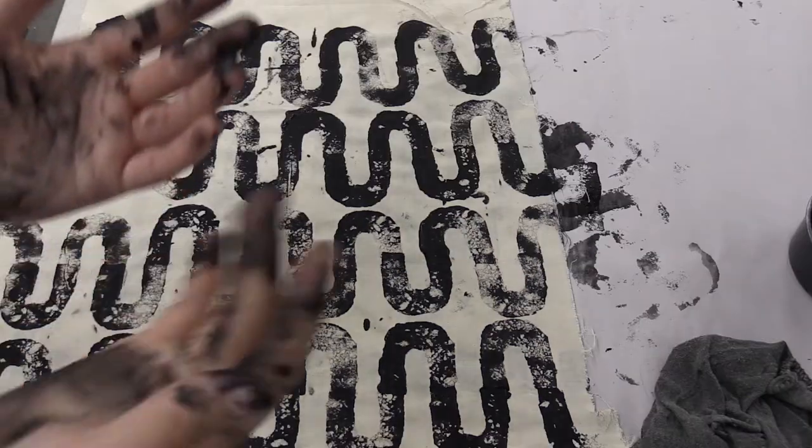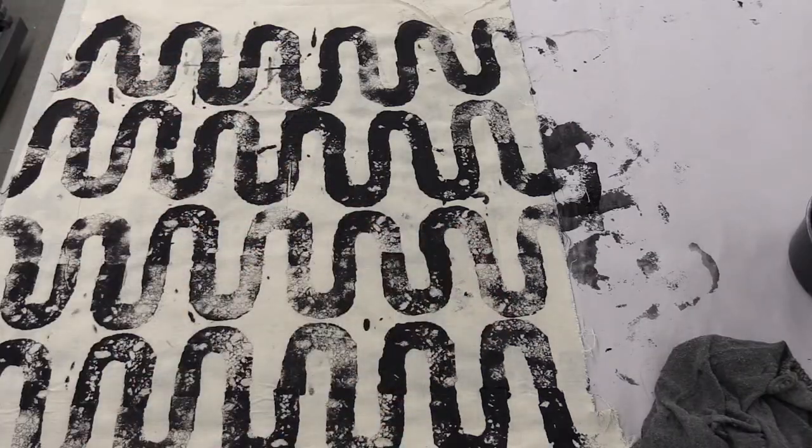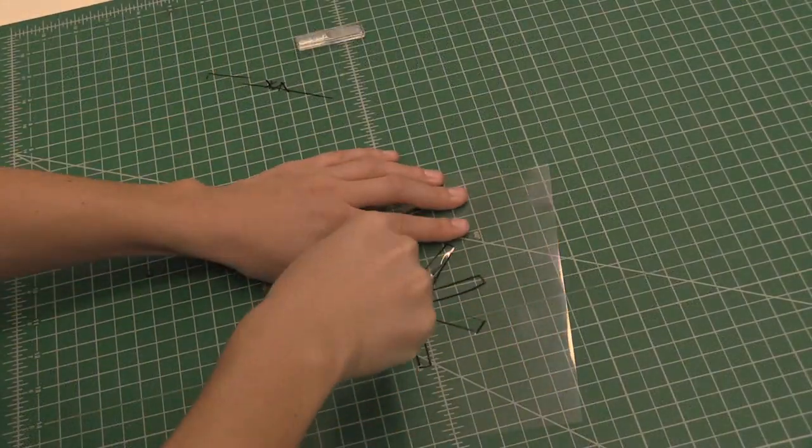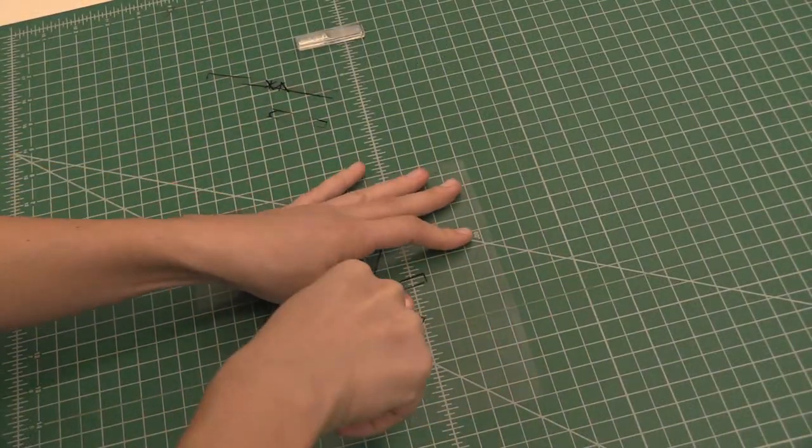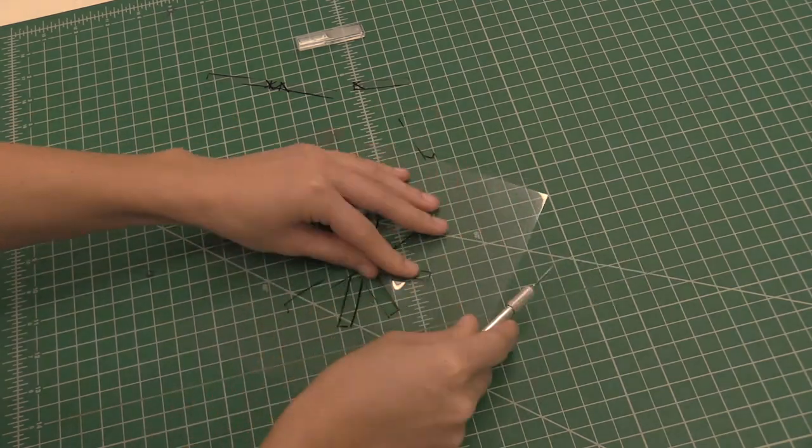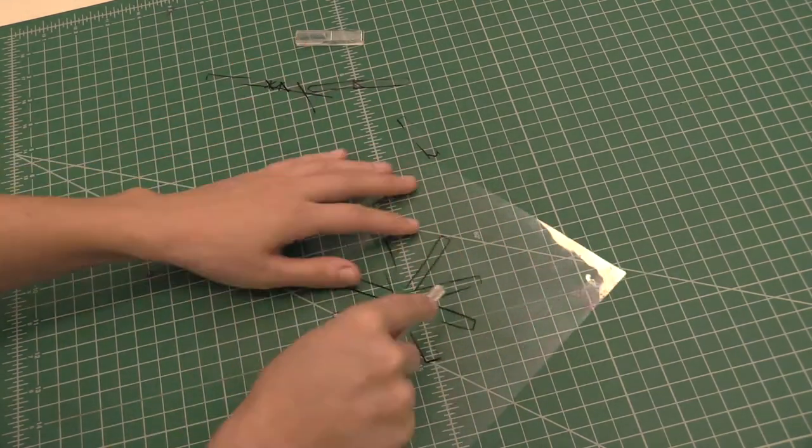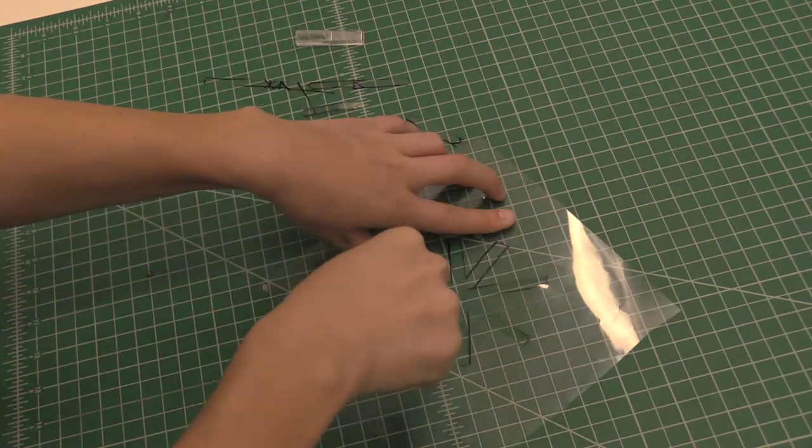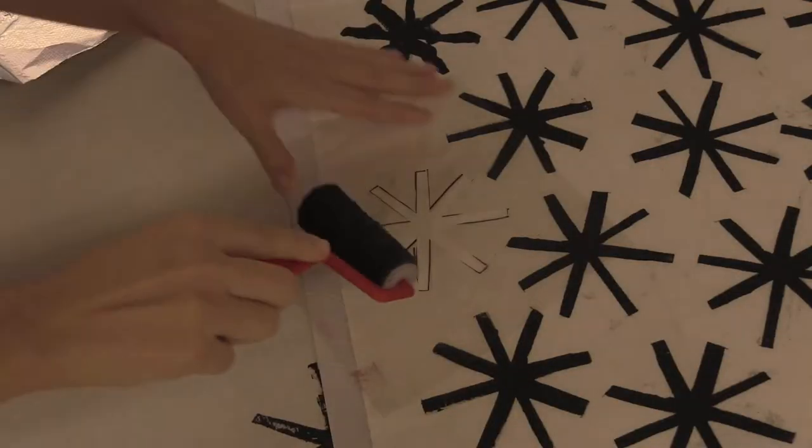The process might be a little bit messy though. Another technique you could try is making a stencil by cutting it with an exacto out of mylar or something like cardstock. You could also use pre-made stencils.